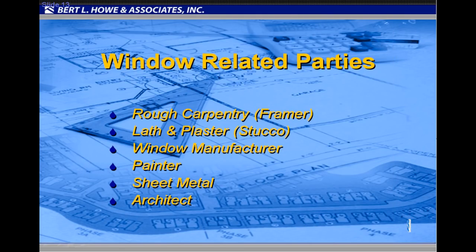Parties typically involved in window-related issues include the rough carpenter or framer, who is often responsible for installing the window, the lath and plaster subcontractor, the window manufacturer, the painter, the sheet metal subcontractor, and the architect.